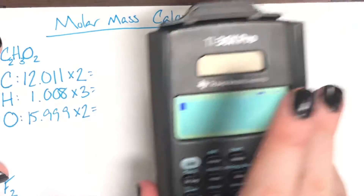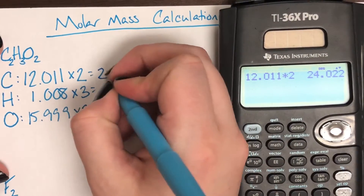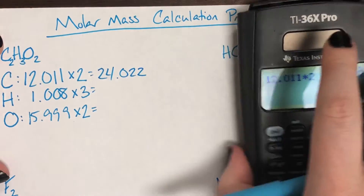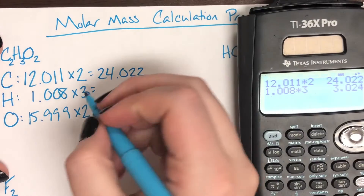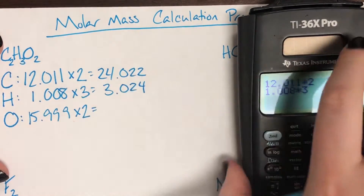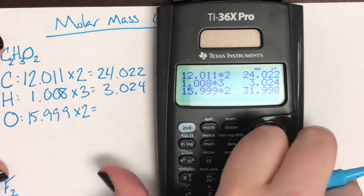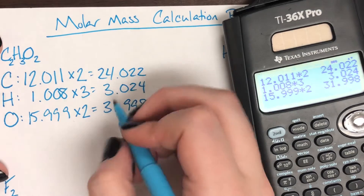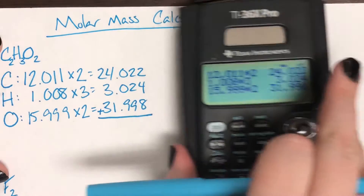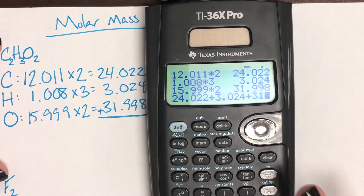I'm going to take my calculator and plug those numbers in. So 12.011 times 2 gives me 24.022. Then for hydrogen, 1.008 times 3 gives me 3.024. Now for oxygen, 15.999 times 2 gives me 31.998. Once I have all of these resultant masses, I can go ahead and add all of them up — 24.022, 3.024, and 31.998.